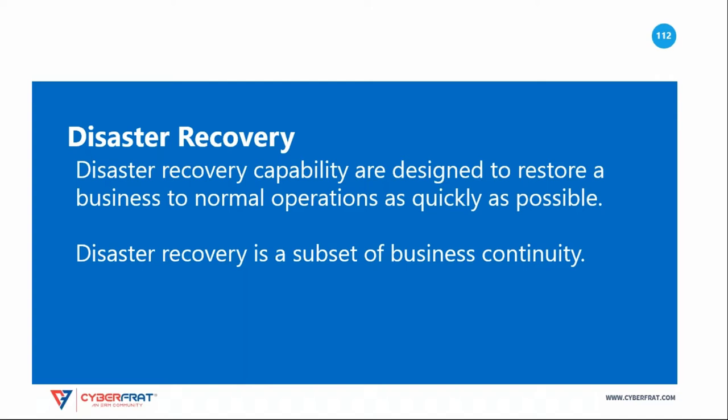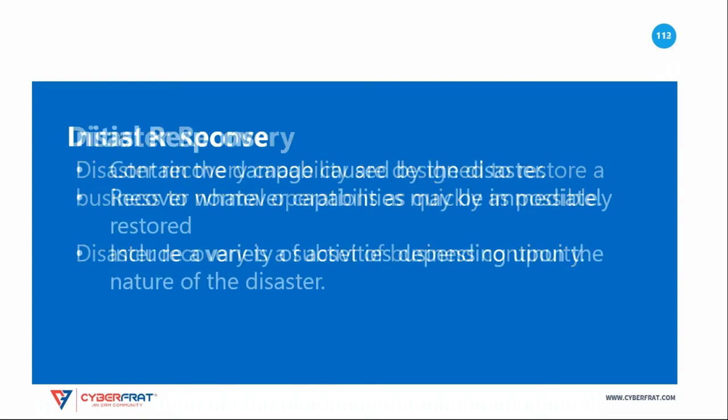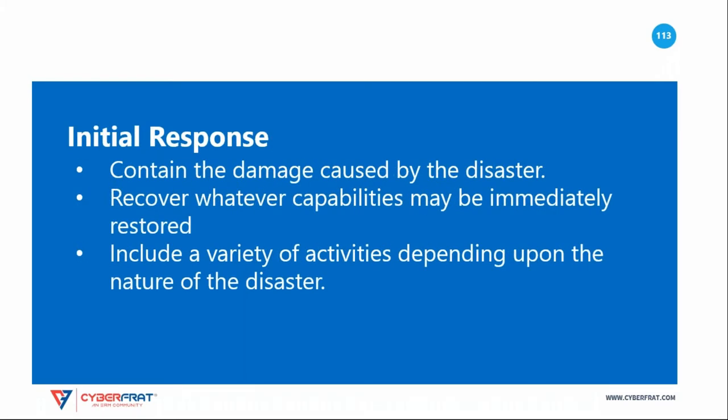The disaster recovery plan may include immediate measures that get operations up and running again temporarily, but the disaster recovery effort is not finished until the organization is completely back to normal operation. The initial response following an emergency disruption is designed to contain the damage to the organization and recover whatever capacity may be immediately restored. The activities during the initial response will vary widely depending upon the nature of the disaster.